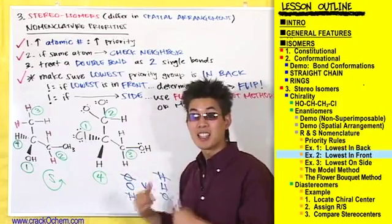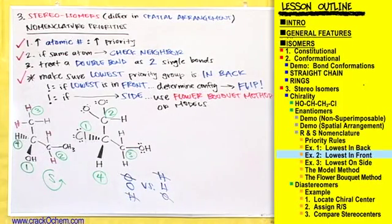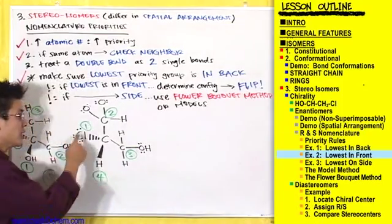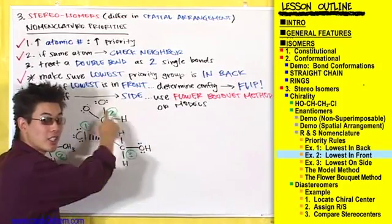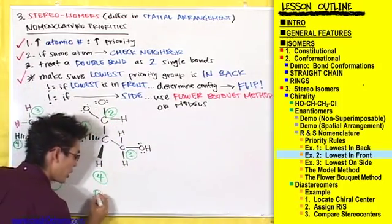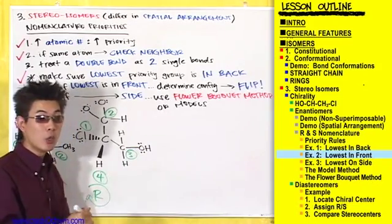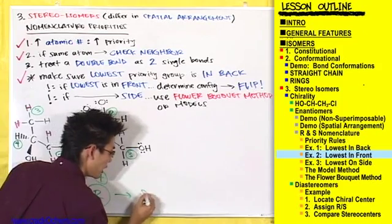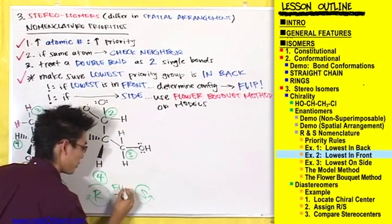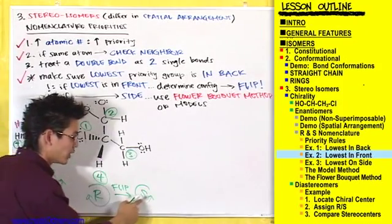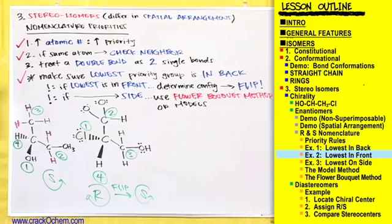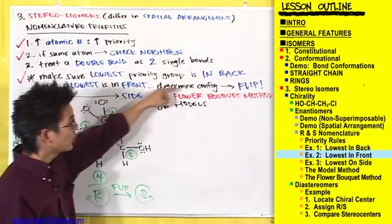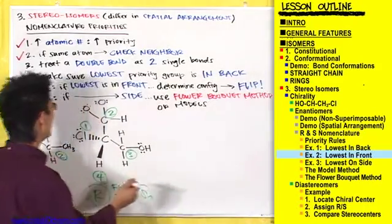So we would say that this compound has S stereochemistry. These substituents go from one to two to three in a clockwise direction, which makes it look like it should be R configuration. But since the lowest priority group, the hydrogen, was facing the front, we flip our decision from R to S. This was a great example of how when the lowest priority group is facing the front, you determine the configuration and then flip it.